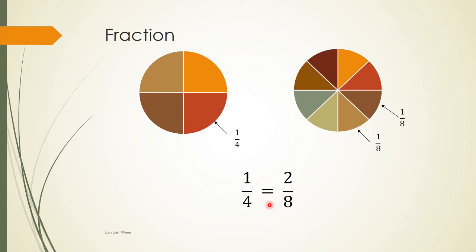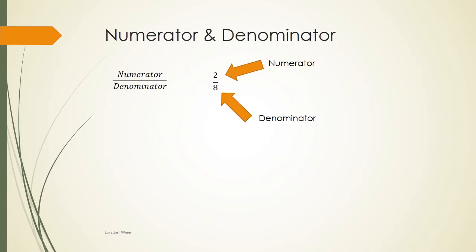We can say that one over four is actually equal to two over eight. Why two over eight? Because you have one over eight plus one over eight, which is two over eight. Now for the fraction two over eight, the number on top is called the numerator and the number at the bottom is called the denominator. So two is the numerator and eight is the denominator.